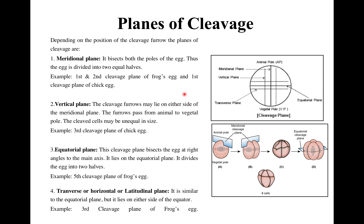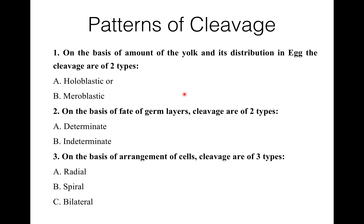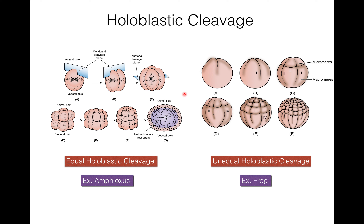Cleavage planes are important to determine the fate of blastomeres in the egg. Now, the patterns of cleavage: there may be three patterns. First, on the basis of the amount of yolk and its distribution in eggs, cleavage may be holoblastic or meroblastic. Second, on the basis of the fate of germ layers, cleavage may be determinate or indeterminate. Third, on the basis of arrangement of cells, cleavage may be radial, spiral, or bilateral.